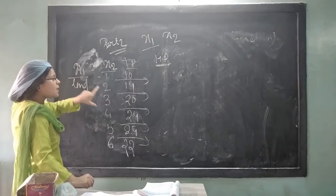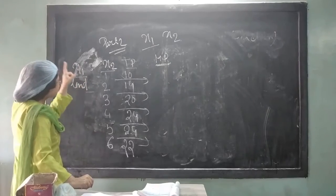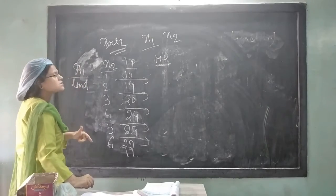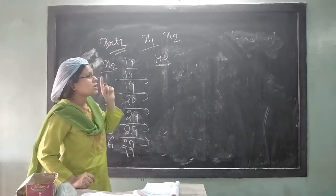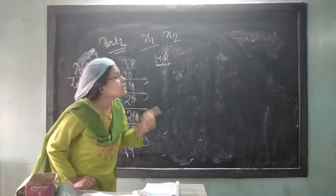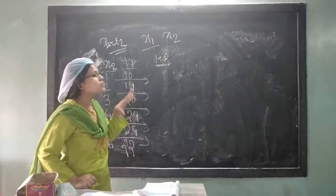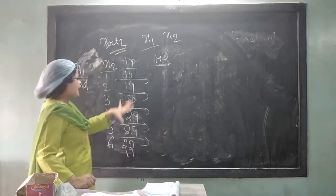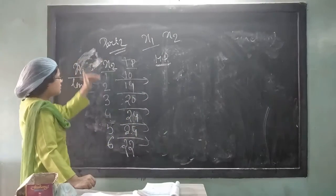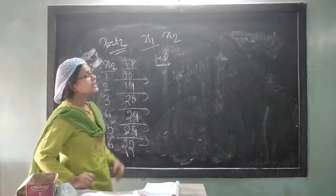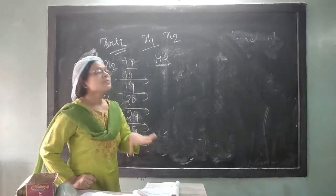But when this absorbability rate of the fixed factor will fall down, then what will happen? The total product will not increase. It will fall down and after sometimes, that additional variable input cannot be employed.